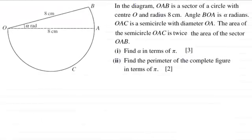Hi there. Now for this question we're told that in this diagram OAB is a sector of a circle with centre O and radius 8 centimetres. Angle BOA is α radians and OAC is a semicircle with diameter OA. The area of the semicircle OAC is twice the area of the sector OAB and what we've got to do is find α in terms of π for three marks and in the second part find the perimeter of the complete figure in terms of π for two marks.